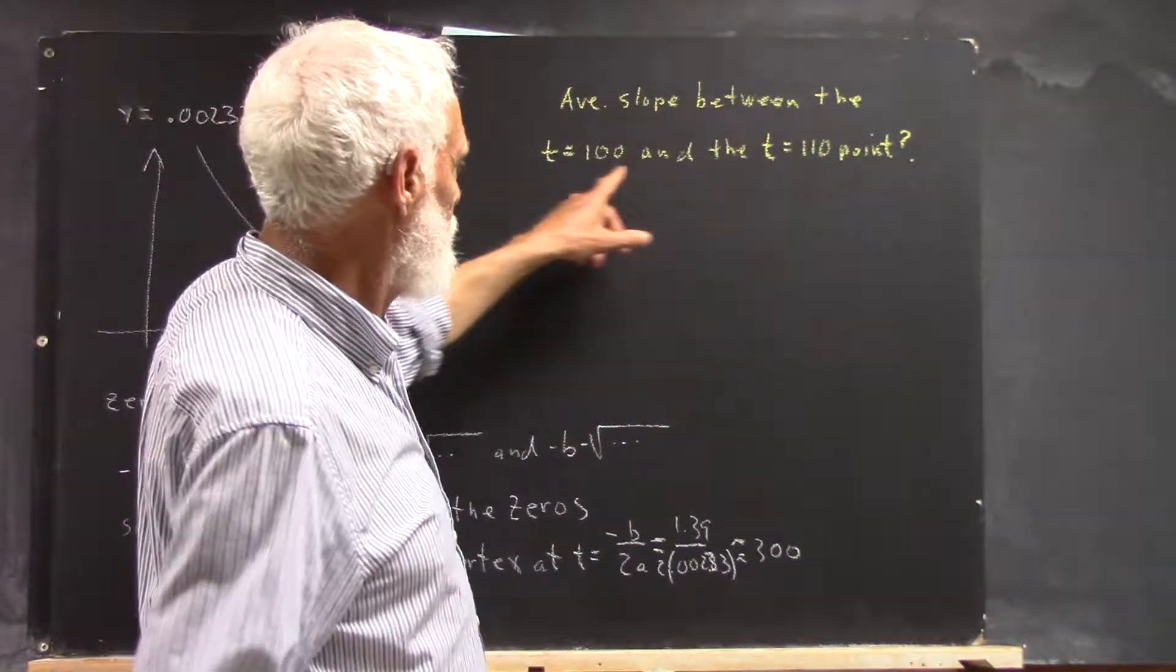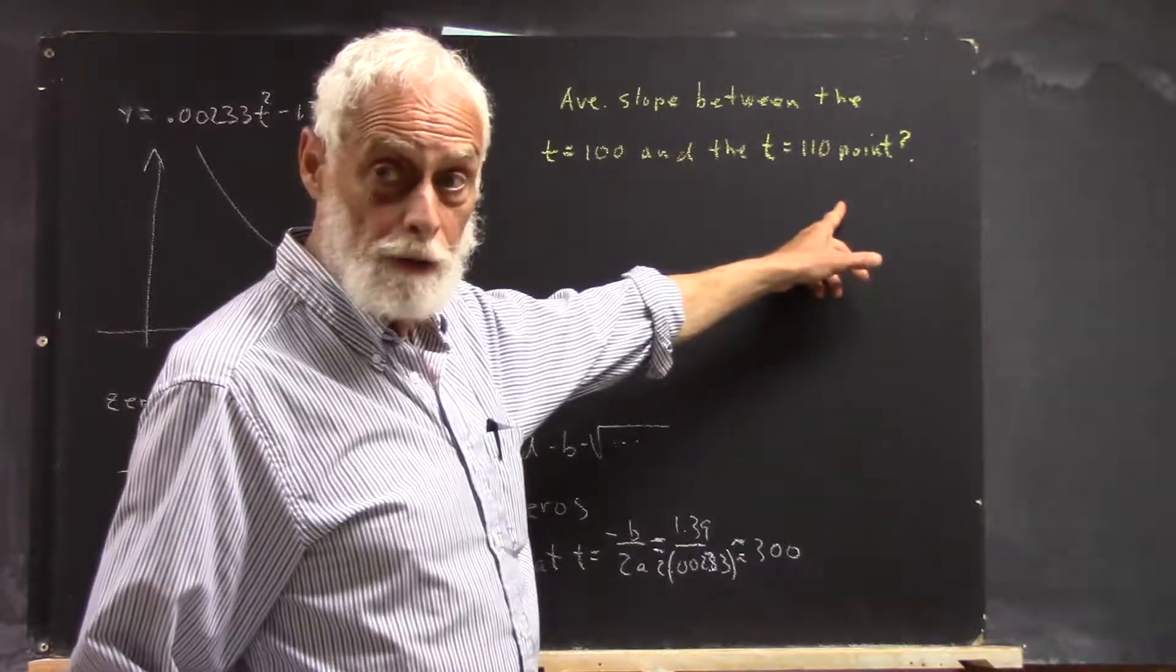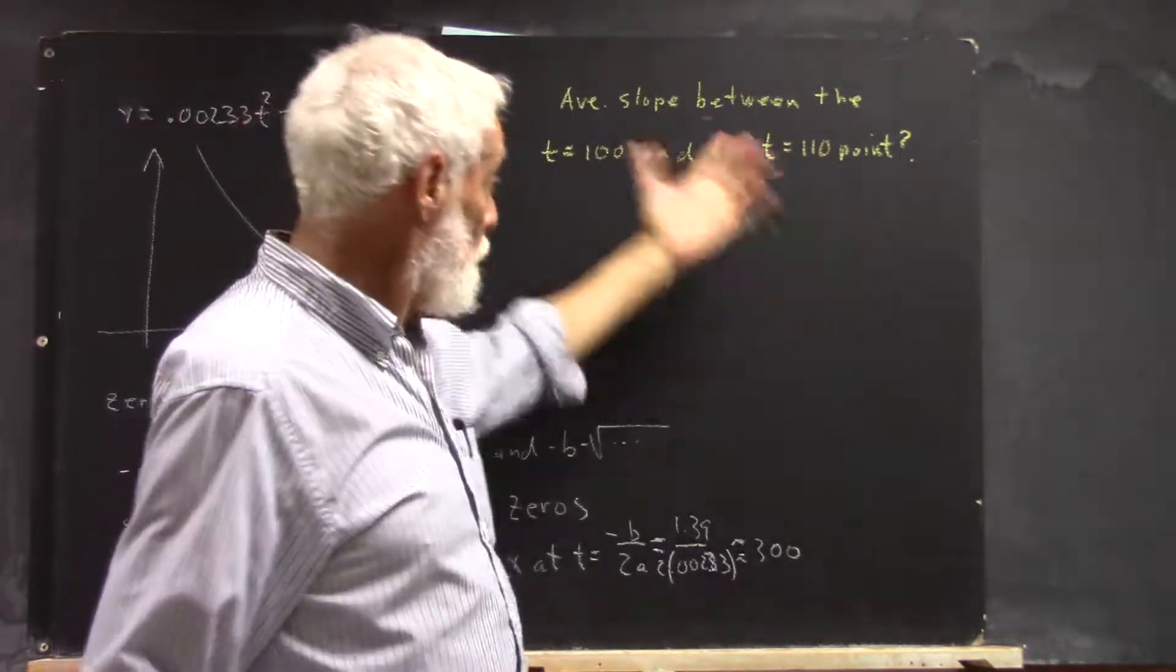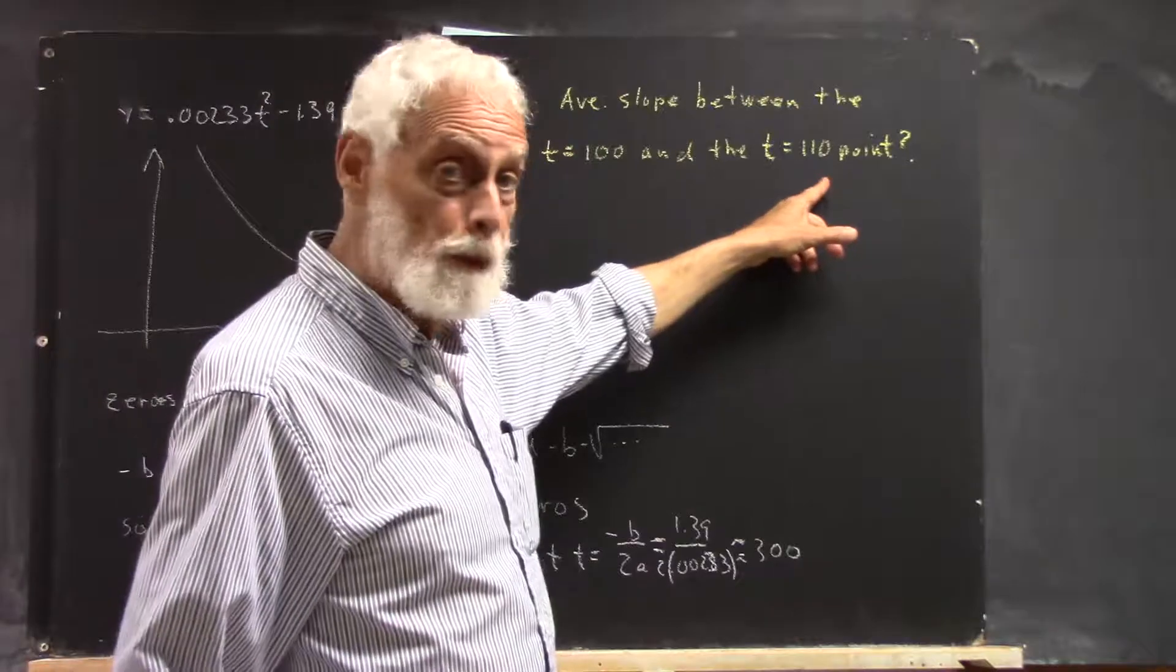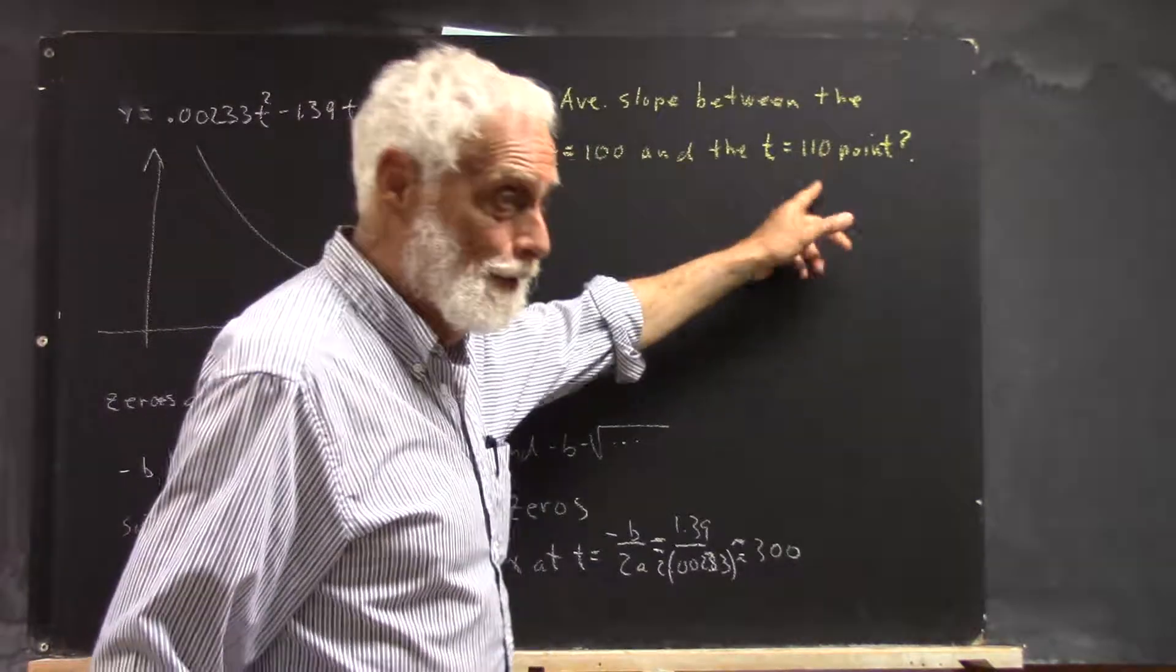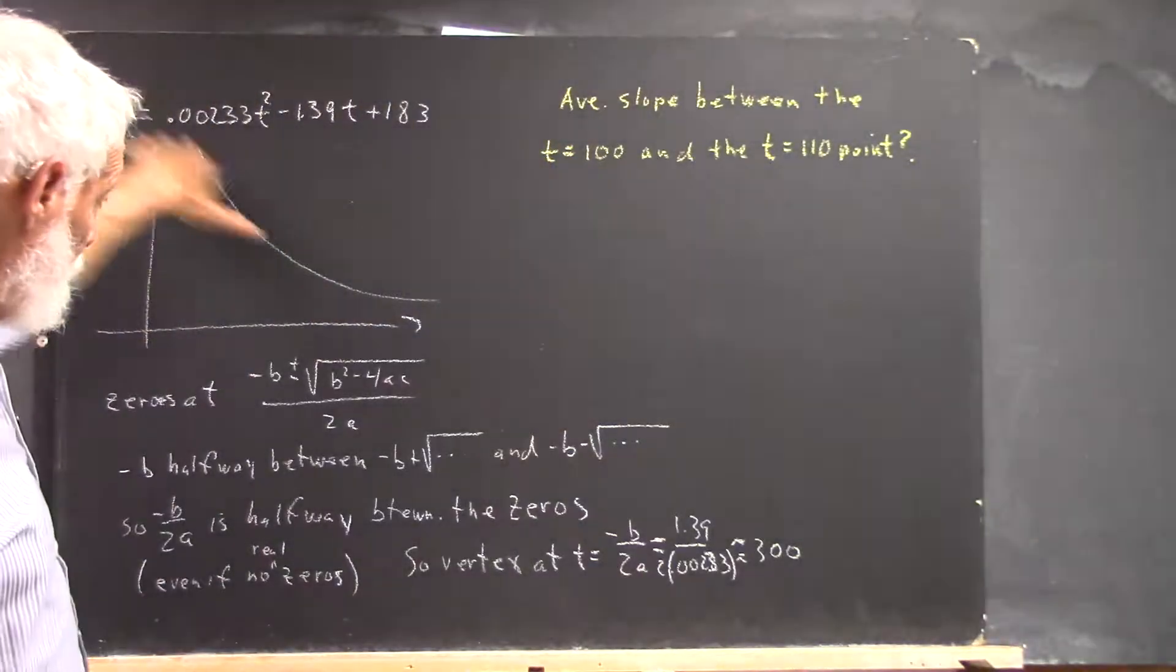So we want to find the average slope between t equals 100 and t equals 110 point. What do we mean by the t equals 110 point? That means t is 110 on this graph.